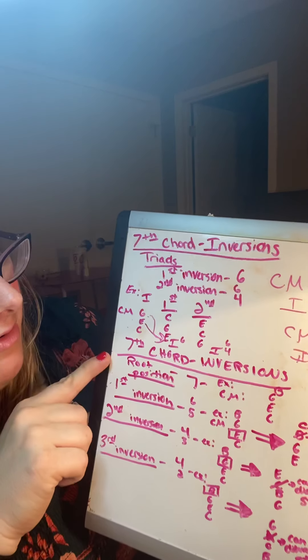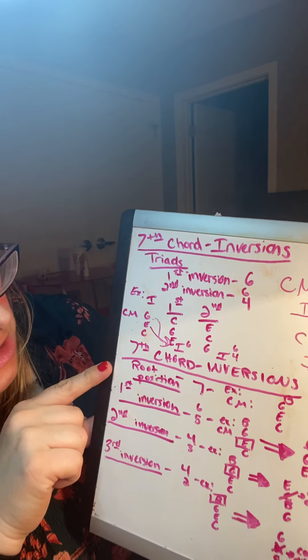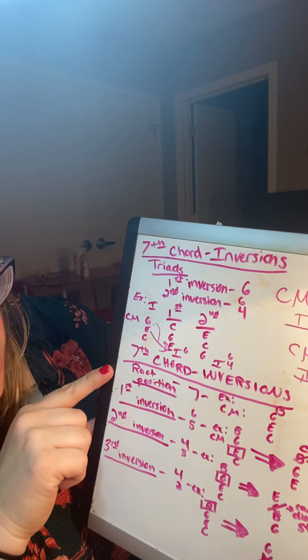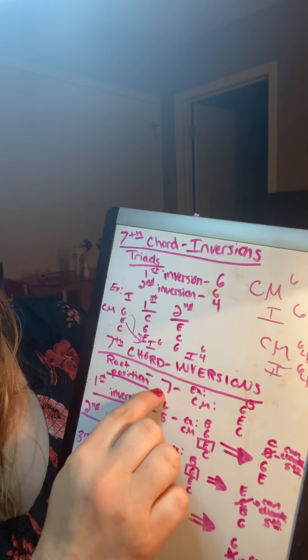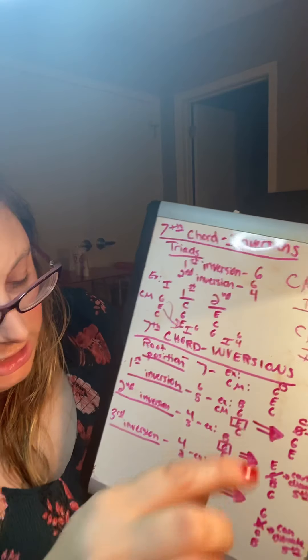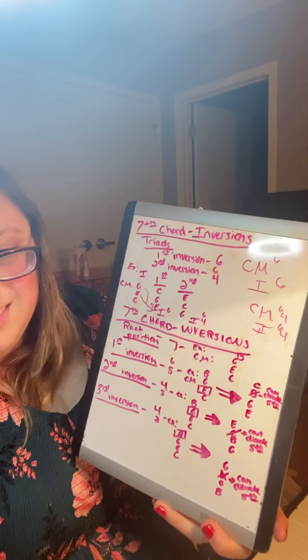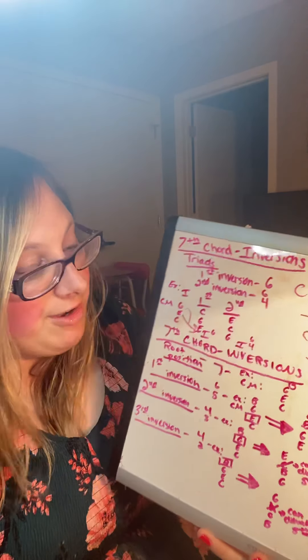So the last thing we're going to talk about today are seventh chord inversions. So for inversions of seventh chords, you would have your root position seventh chords. You write a C major seven and that's C, E, G, B. That is a C major seven chord.